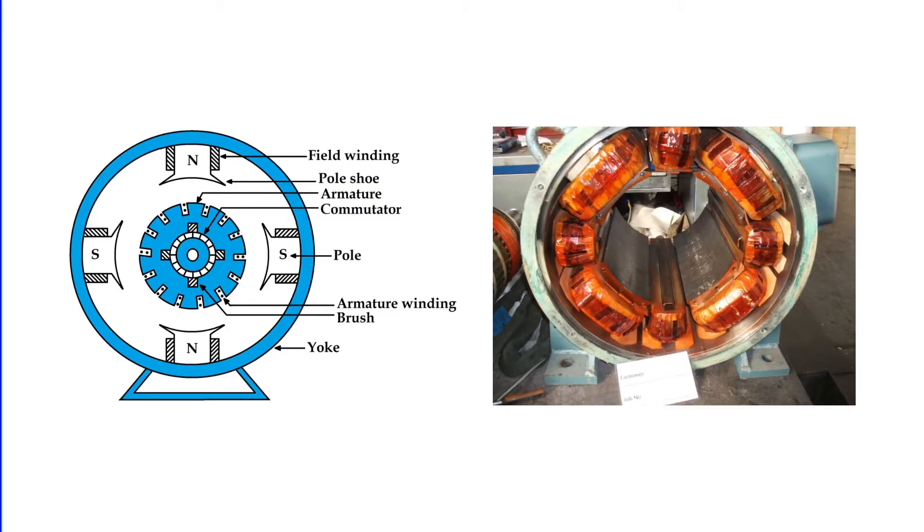The field coils, wrapped around the poles, are made from insulated copper wire or strips. They receive direct current, either from an external source or a separate exciter, and are configured in series or parallel with the armature winding, aligning with the direction of rotation.